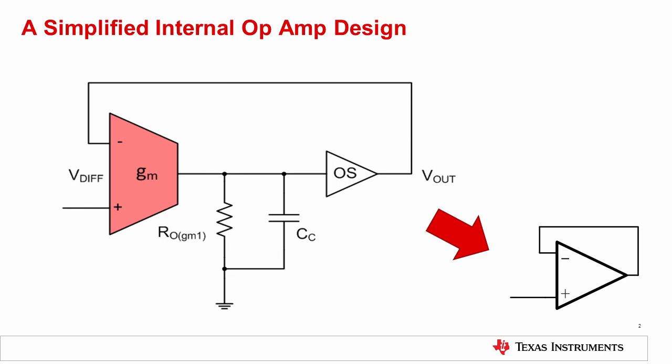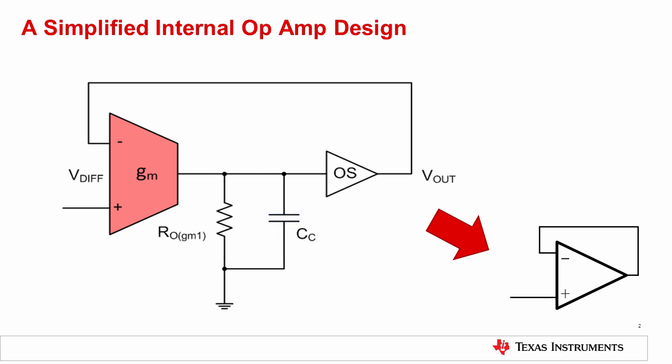Let's examine a simplified block diagram for an op amp in a buffer configuration. The input stage is represented by the transconductance block, GM. This stage will source or sink current into a compensation capacitor, CC, depending on the differential voltage presented between its inputs. CC is generally referred to as the Miller compensation capacitor. The voltage across the compensation capacitor is buffered by the output stage amplifier, which drives the system load. To close the loop, the output is fed back to the input stage as negative feedback.